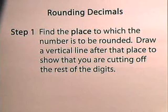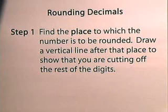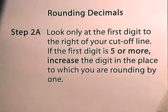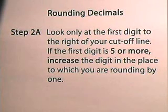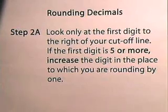Now let's look at the steps for rounding decimals. Step one: find the place to which the number is to be rounded. Draw a vertical line after that place to show that you are cutting off the rest of the digits. Step two, part a: look only at the first digit to the right of your cutoff line. If the first digit is five or more, increase the digit in the place to which you are rounding by one.